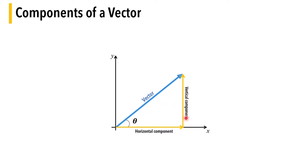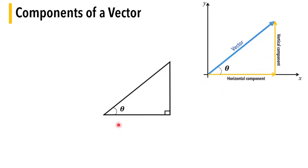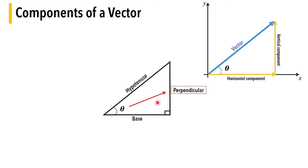If we take a closer look, the vector forms a right-angled triangle. The side in front of the angle is called the perpendicular and the side beside the angle is called the base. This is important to understand the concept of finding rectangular components of a vector. The third side is the hypotenuse, which is actually the vector itself.